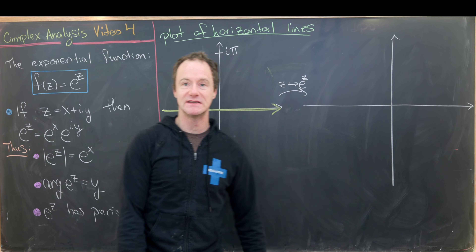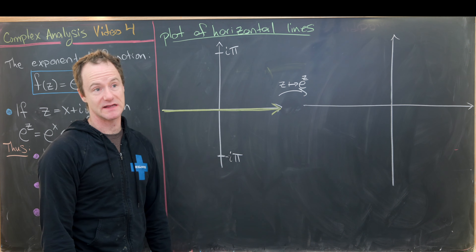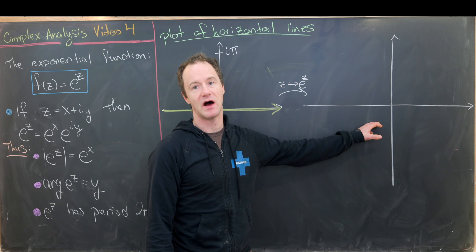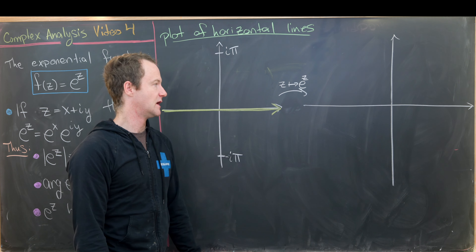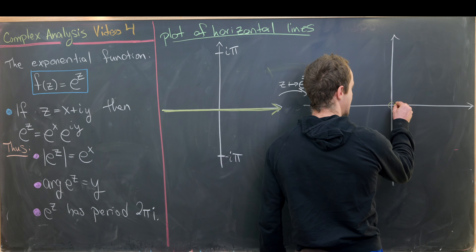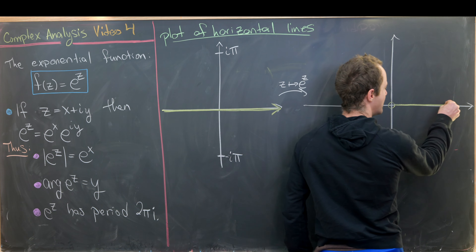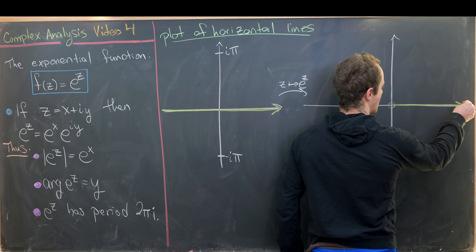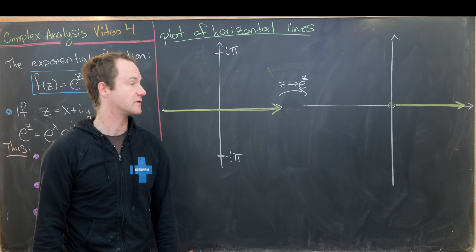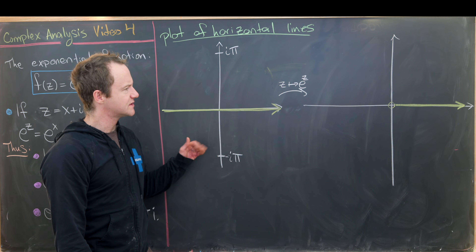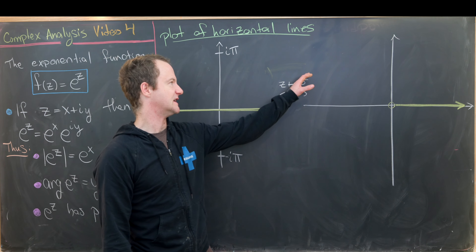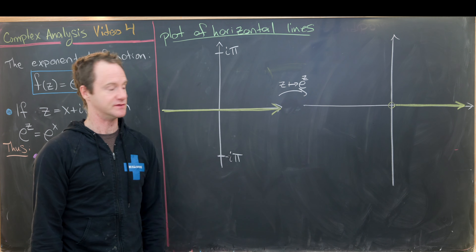Since e to the x is always positive, we end up with something that has positive real part and zero imaginary part — that's just the open ray starting at the origin, not including the origin, going out along the positive real axis. Notice we cannot achieve the point zero because e to anything is never equal to zero.